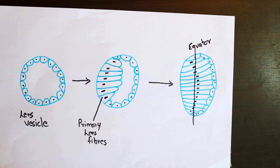New lens fibers are generated from the equatorial cells of the lens epithelium in a region referred to as the germinative zone.